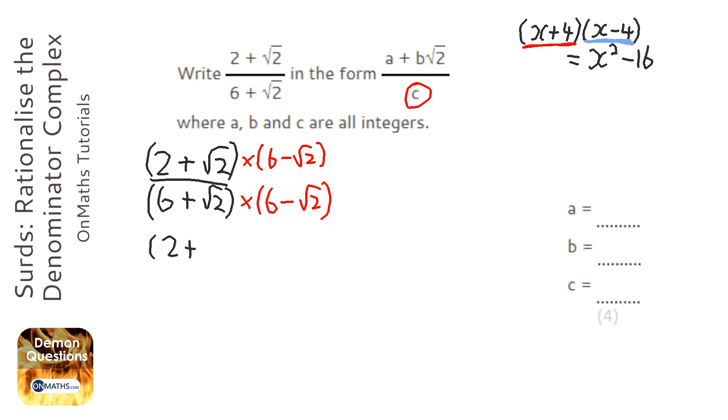Well at the top it gives us 2 plus root 2 times 6 minus root 2, and at the bottom that gives us 6 plus root 2 times 6 minus root 2.